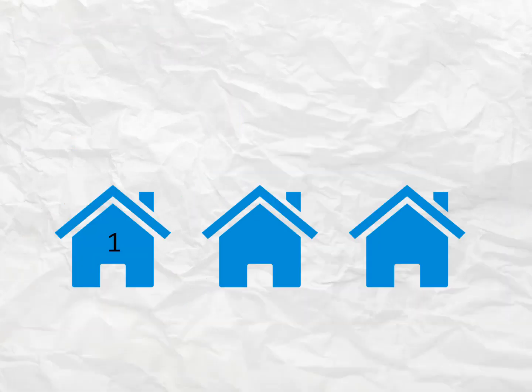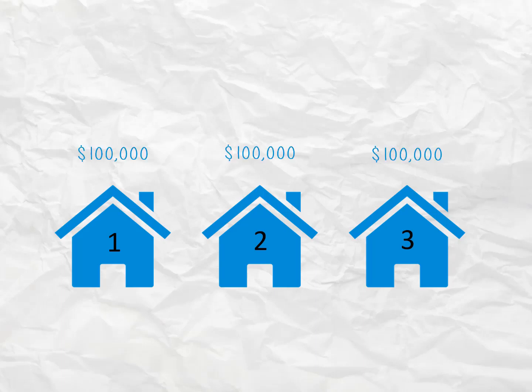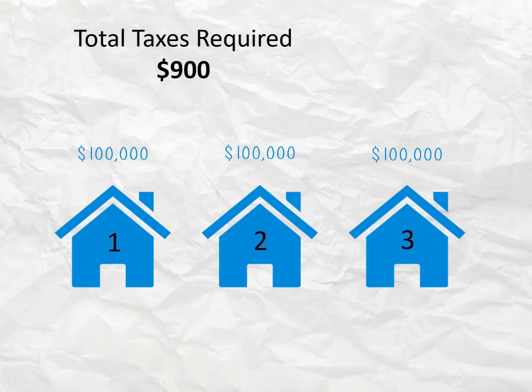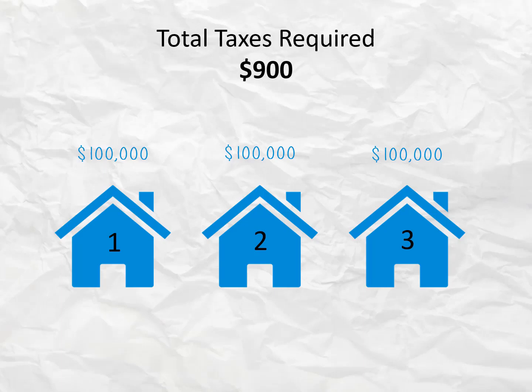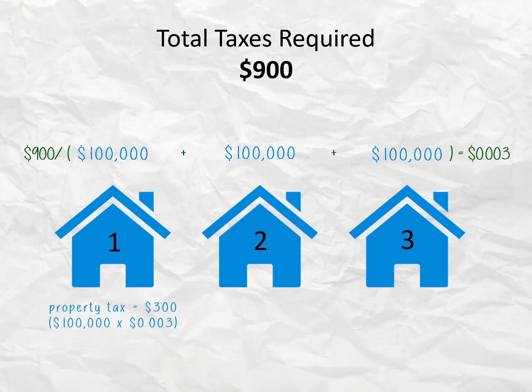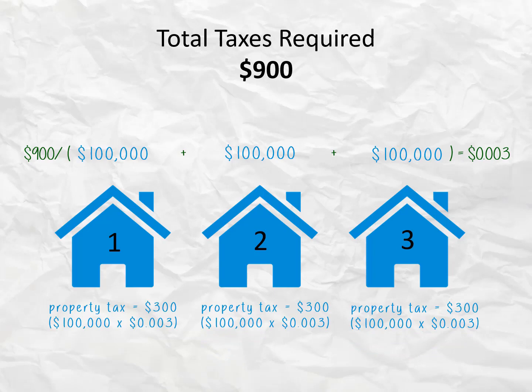Let's assume three houses each have an assessed value of $100,000 and the combined budgets of all of the local taxing districts is $900. To calculate each property's tax rate, the $900 total combined budget is divided by the combined assessed value of all three properties, equaling .003 dollars. That means each property owner would pay .003 times the $100,000 assessed value of their property, or $300. Each property pays their share of taxes based on their assessed value.